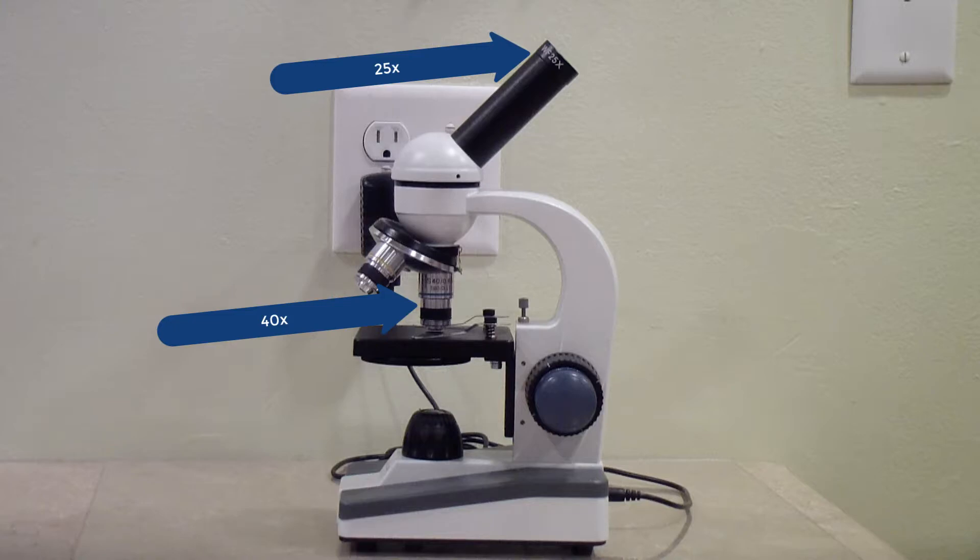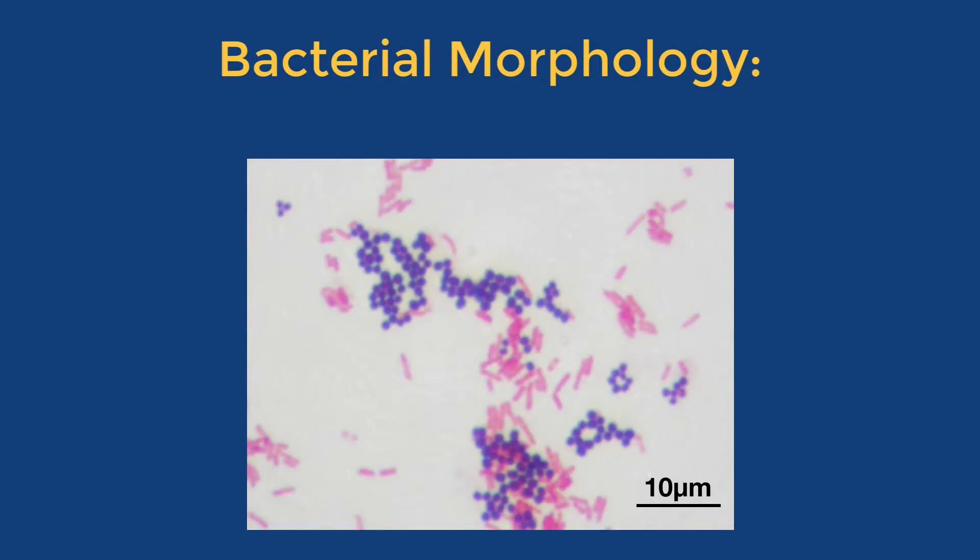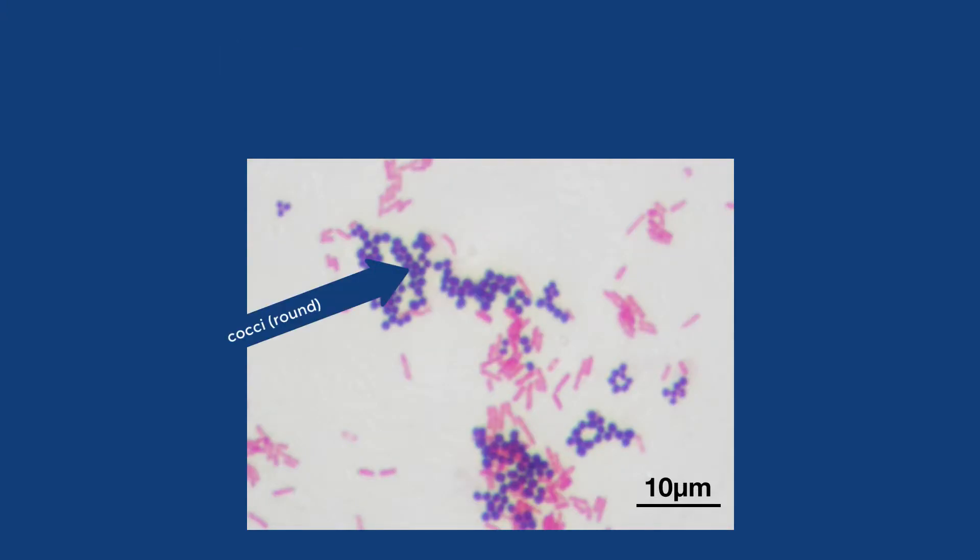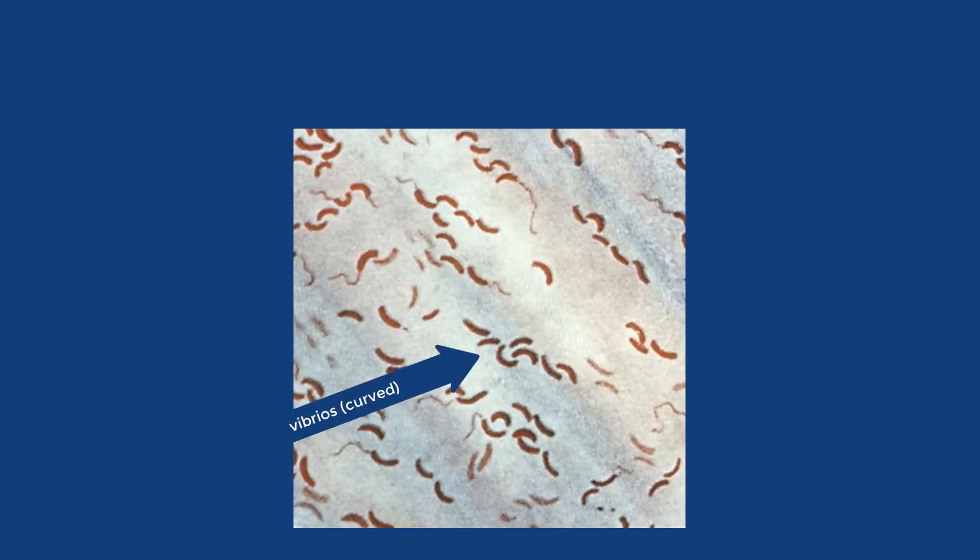Bacteria can have different shapes, but in the environmental samples we will do in our lab, you're most likely going to find just round bacteria or oval-shaped bacteria. Round bacteria are called cocci; the singular form is coccus. Oval-shaped bacteria are bacilli; the singular form is bacillus.